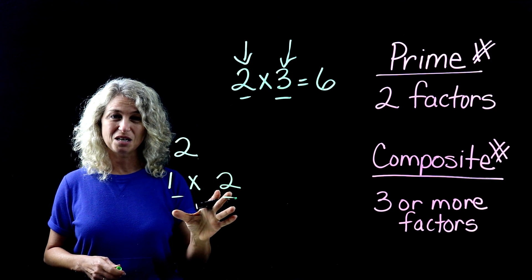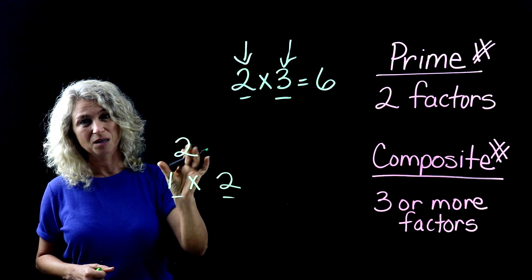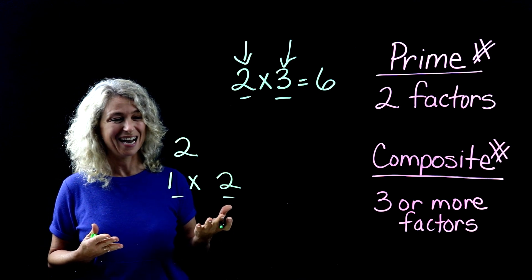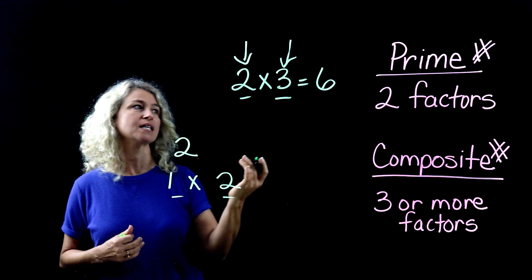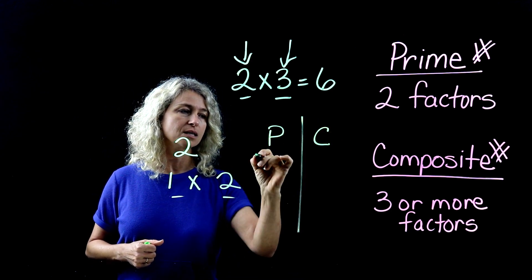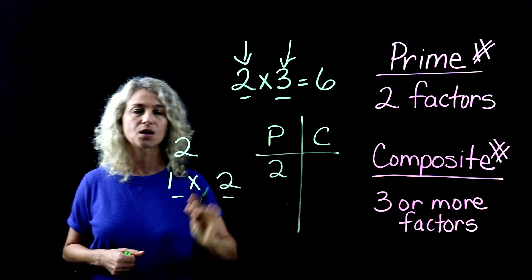Are there any other numbers that we can multiply to get to the number two? No, there's really not. So two would be listed under the prime category. So let's just put two right here under prime.